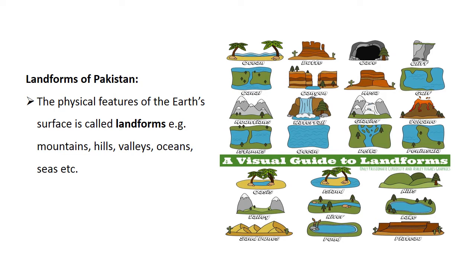First of all, what are landforms? Land is not flat — it has many different forms known as landforms, or the physical features of the earth's surface. Examples include mountains, hills, valleys, oceans, and seas. Pakistan is blessed with a varied landscape: there are barren deserts, flat plains, forests, high mountains, plateaus, valleys, vegetation, and a good river system.